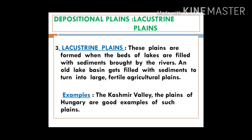Good examples include the Kashmir Valley in India and the Plains of Hungary, both of which are good examples of lacustrine plains. The Kashmir Valley formed through this process in which the lake dried up and the sediments led to the formation of the lacustrine plain.